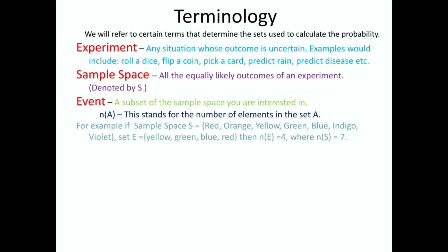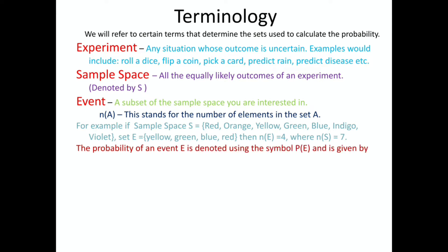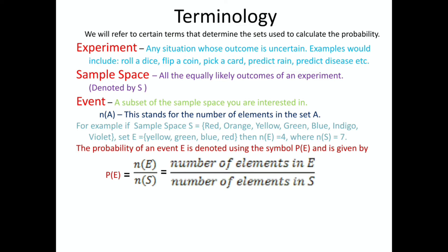Consider an event E with 4 colors: yellow, green, blue, and red. So the number of elements in E are 4. The probability of an event E is denoted as P(E) and is given by P(E) = N(E) / N(S), that is, number of elements in E divided by number of elements in S. So P(E) = 4 by 7.